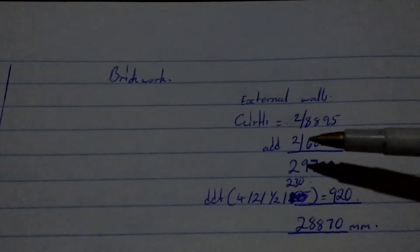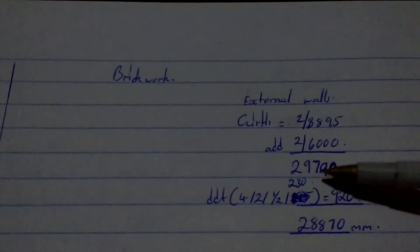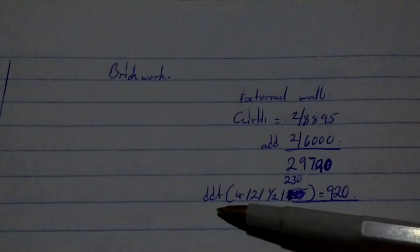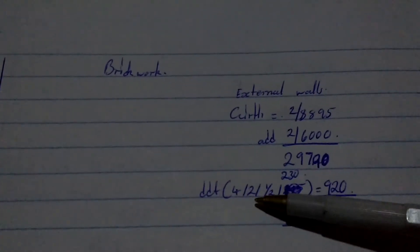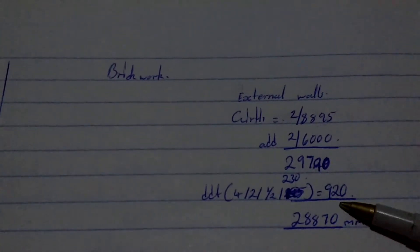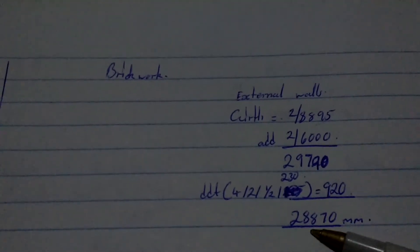And then we're going to deduct 4 by 2 by 1.5 by 2.3 and then we get 920. We're going to deduct 920 from this number. We get 28,870 millimeters. So that's our length for external walls.